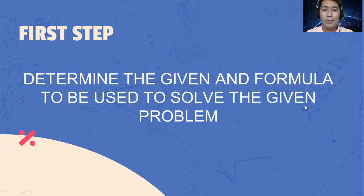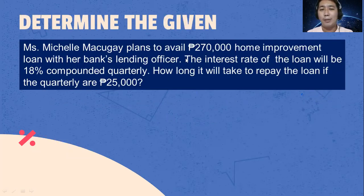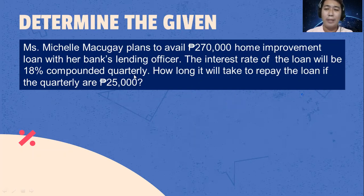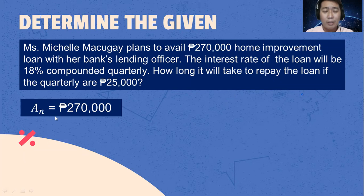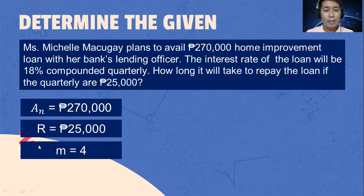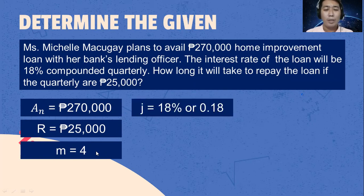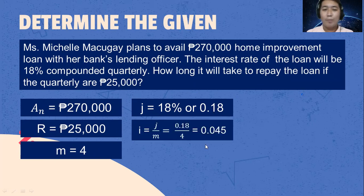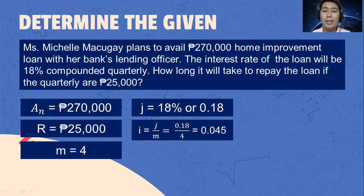Let's identify the given and formula to be used. A sub N, the present value, is 270,000. The periodic payment R is 25,000 per quarter. The number of compoundings per year M is 4 because it's quarterly. J is 18%, the nominal interest rate. To get I, we compute J over M: 0.18 divided by 4 equals 0.045.